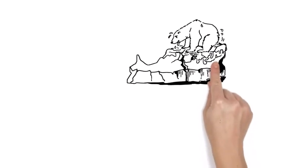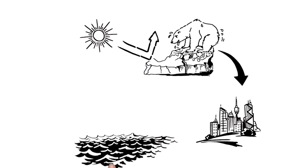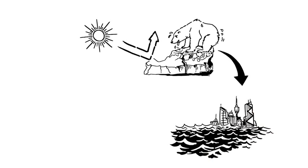When polar ice and glaciers melt, they reflect less sunlight and the sea level rises. Millions of coastal inhabitants are in danger.